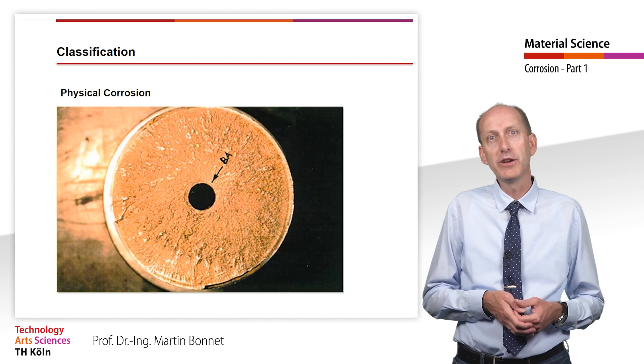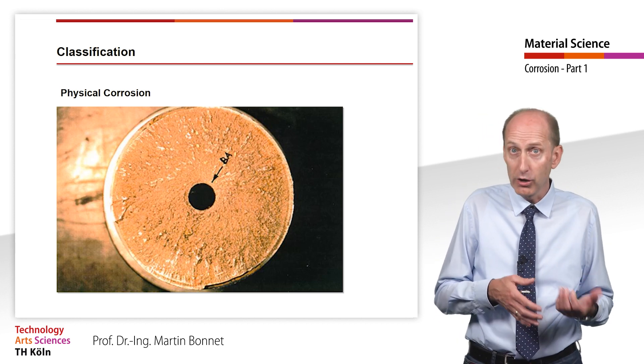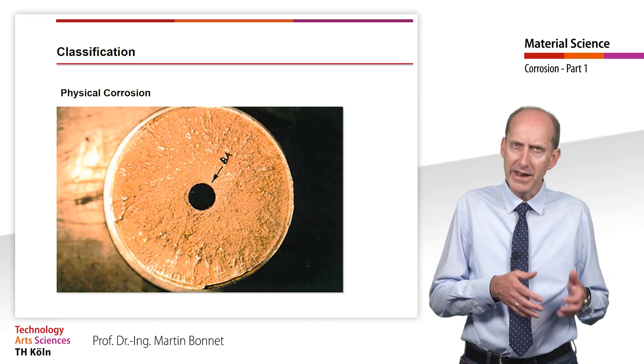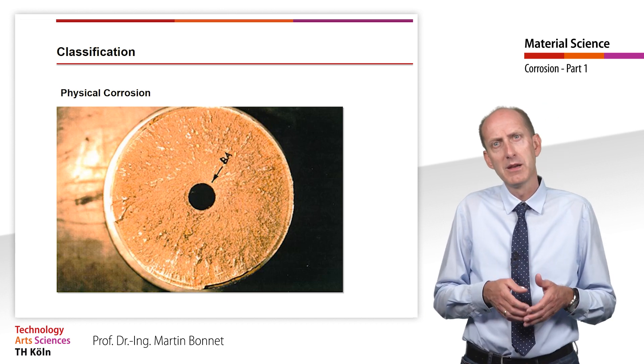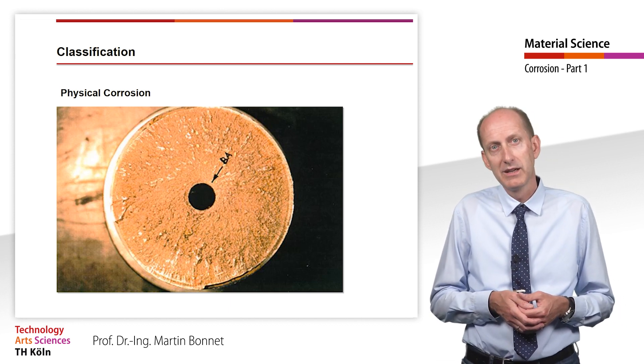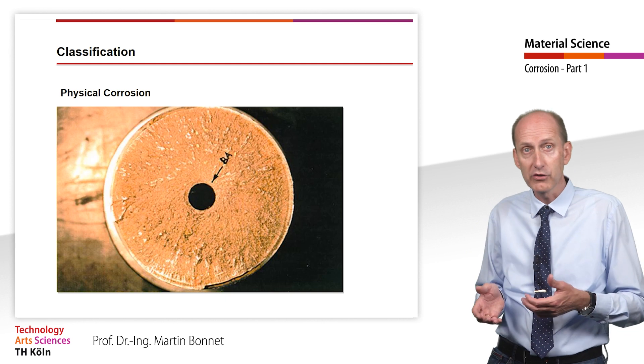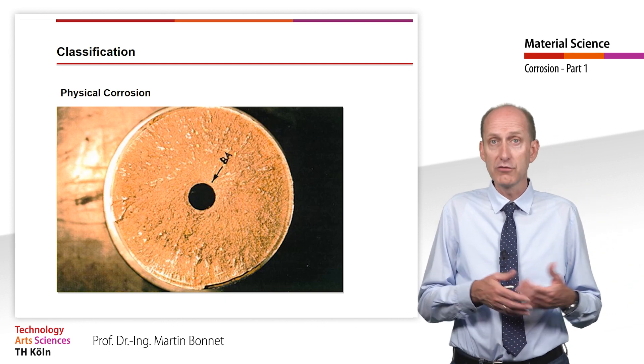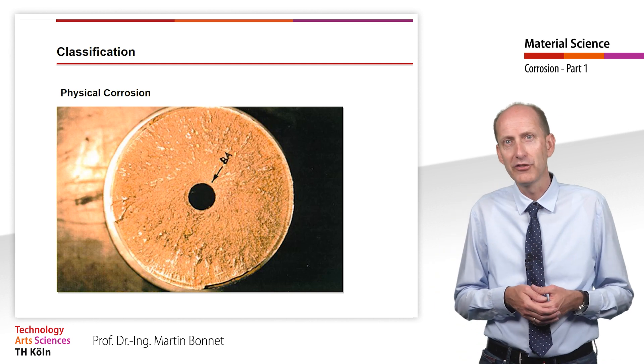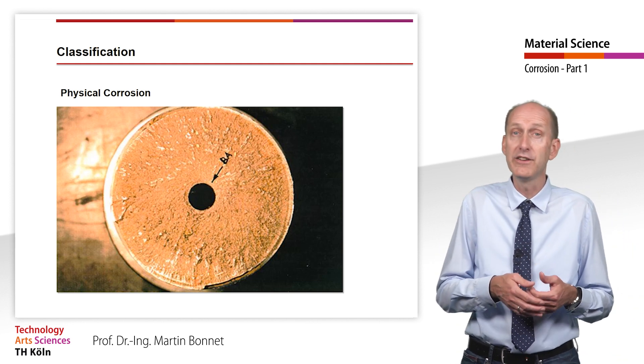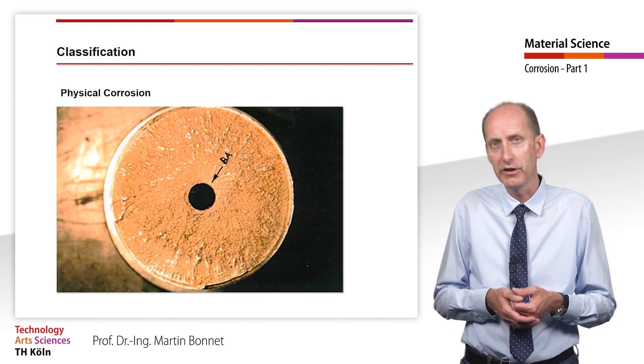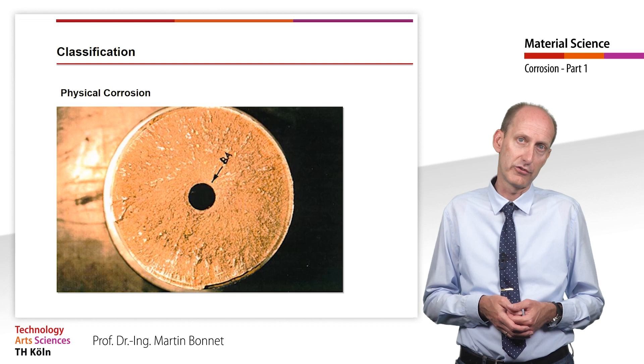First of all, we will look at a brief overview of all possible forms of chemical and electrochemical corrosion and then go into some of the main types of corrosion in more detail later. In addition to chemical, electrochemical and physical corrosion, the corrosion system can be further subdivided into those that lead to corrosion under mechanical stress and those in which corrosion damage can occur even without mechanical stress.